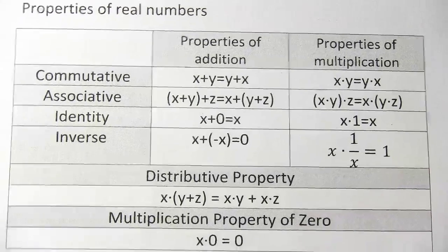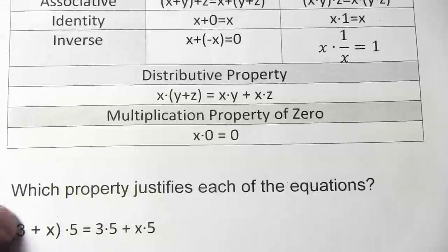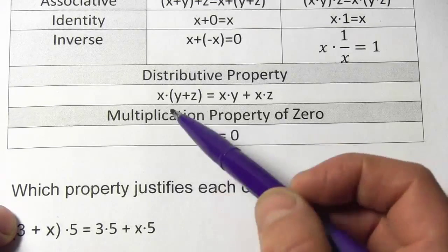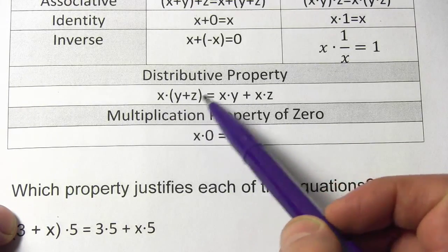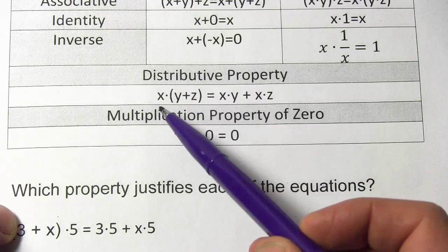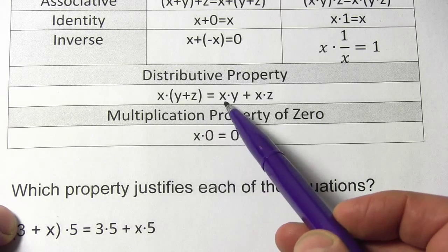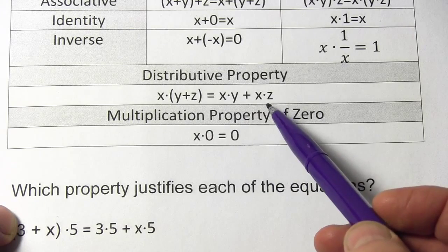And then there's these two other properties here. The distributive property, you've been doing this stuff, you know how this works. If something is outside the set of parentheses, you multiply it through. So x times (y plus z) equals x times y plus x times z.